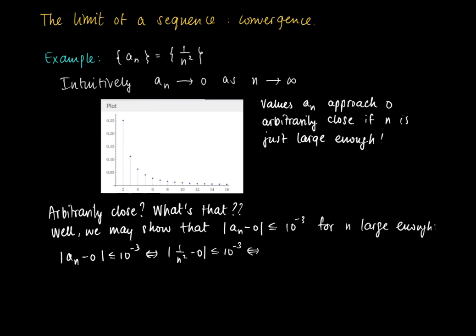We need to solve an inequality: |a_n - 0| < 10^(-3), which is equivalent to |1/n² - 0| < 10^(-3). Since 1/n² is a positive number, this is equivalent to 1/n² ≤ 10^(-3), which means n² must be larger than 10³ = 1000, so we should take n at least the square root of 1000.